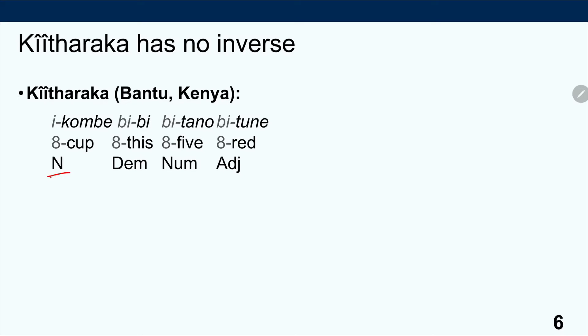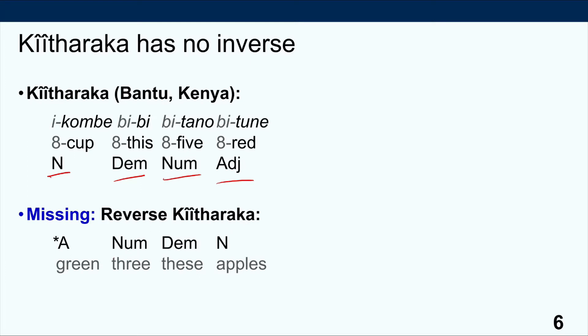Let's look at Kitaraka, a Bantu language spoken in Kenya. In Kitaraka we find the noun first, followed by the same order as in English: noun, demonstrative, numeral, adjective. Don't worry about the prefixes transcribed with the numeral 8 — this is a classifier system, a kind of gender marking that occurs in Bantu languages. What is missing from the empirical record is a reverse Kitaraka — a language with the order adjective, numeral, demonstrative, noun, which would mean something like 'green three these apples.' This order is completely unattested; there is no language in the world that has it, and for all we know, human beings are unable to learn a hypothetical language containing that order.